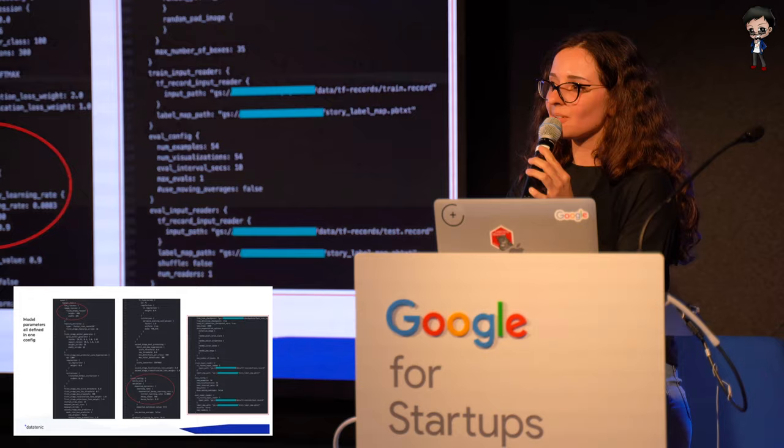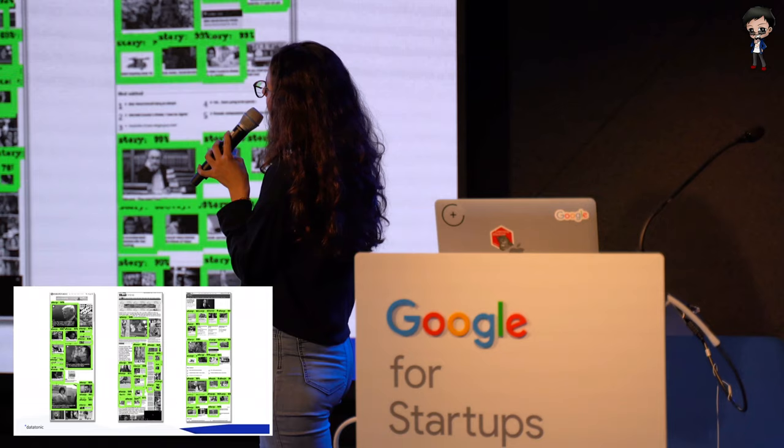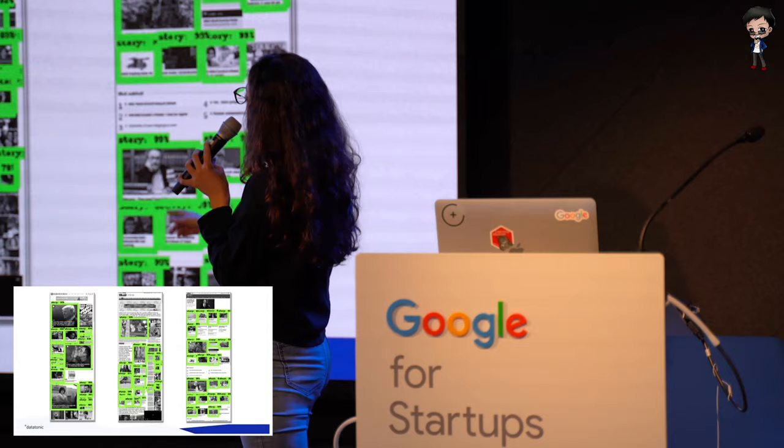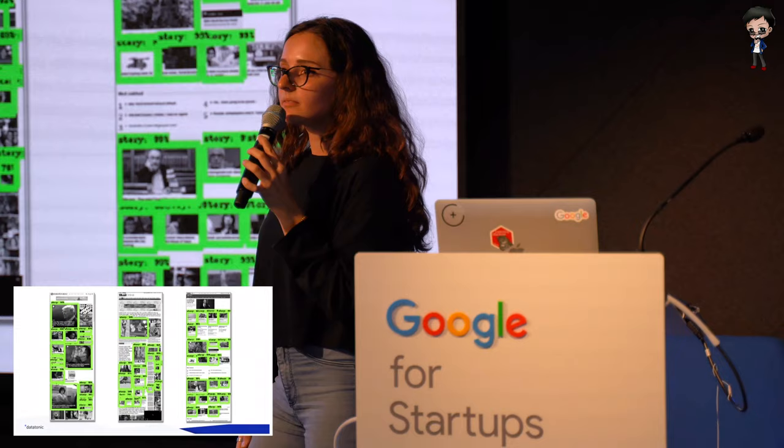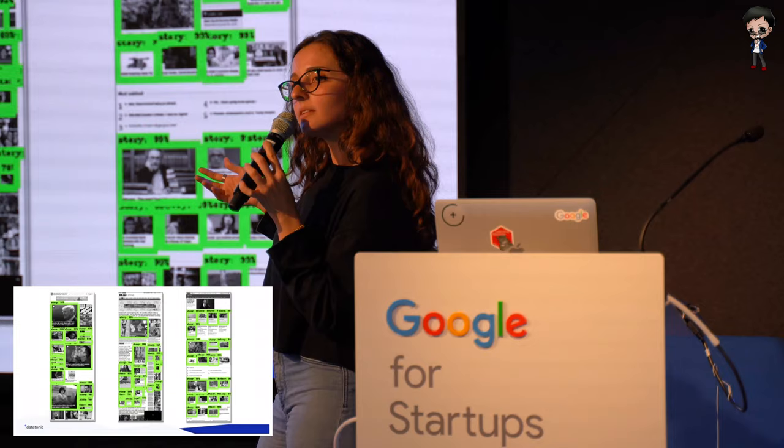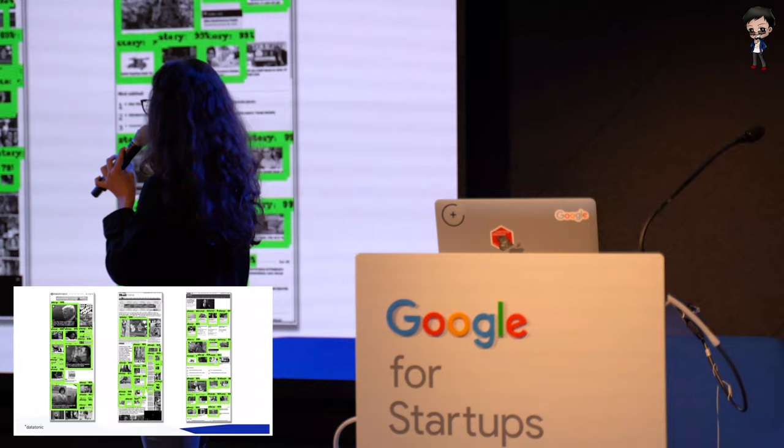This is the output of the model after it's trained. It's quite interesting to look at because we have three different news websites: The Times, The Daily Mail, and the BBC. What you can see, which is typical for object detection, is that the big boxes — the big stories — are much easier to detect, and the small ones are sometimes missed. There are a lot of little stories that are missed.